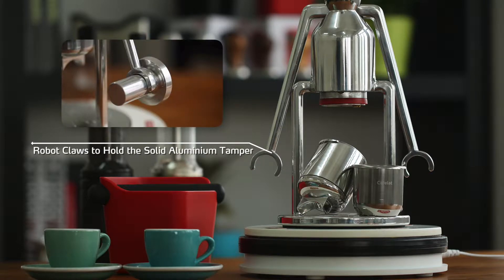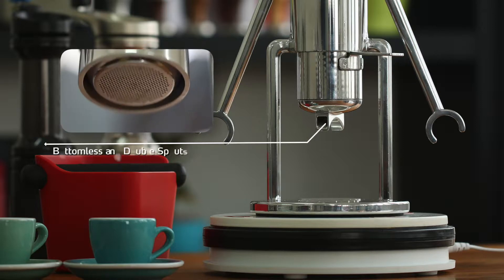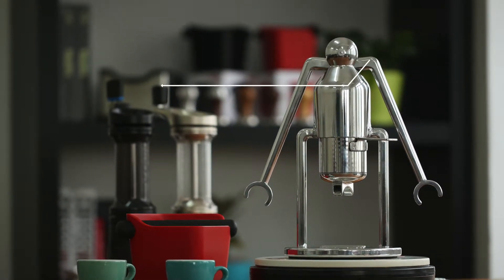It includes robot claws to hold the solid aluminum tamper, naked and double spouts, and a pressure gauge.